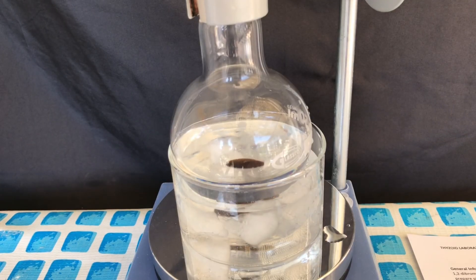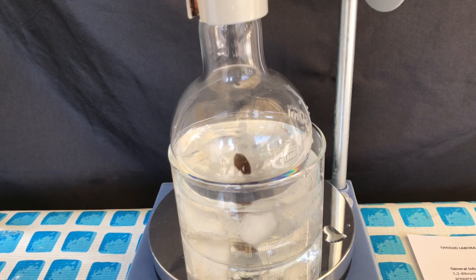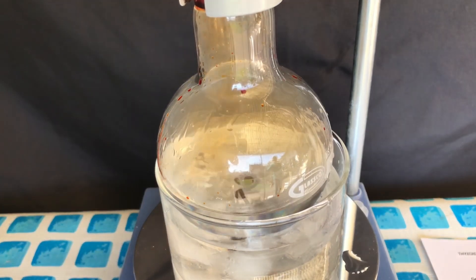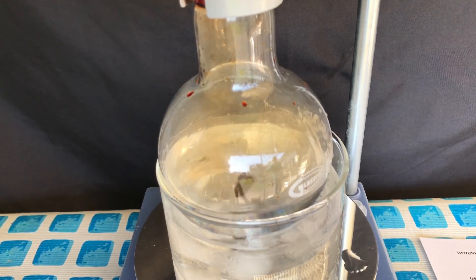The magnetic stirrer was turned on and afterwards we began with the addition of bromine. You can see that upon the addition, the color of the bromine immediately disappears again.